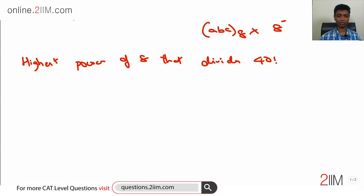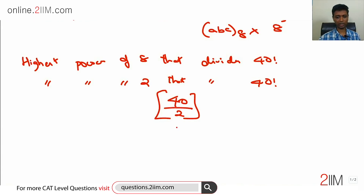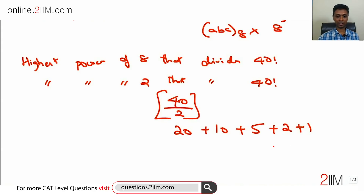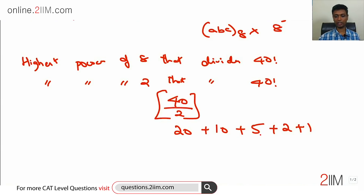We cannot find the highest power of 8 directly — instead we find the highest power of 2 that divides 40 factorial. Using Legendre's formula: floor(40/2) = 20, plus floor(20/2) = 10, plus floor(10/2) = 5, plus floor(5/2) = 2, plus floor(2/2) = 1. We do this because every multiple of 2 gives one factor of 2, every multiple of 4 gives an additional factor of 2, every multiple of 8 gives yet another, and so on.